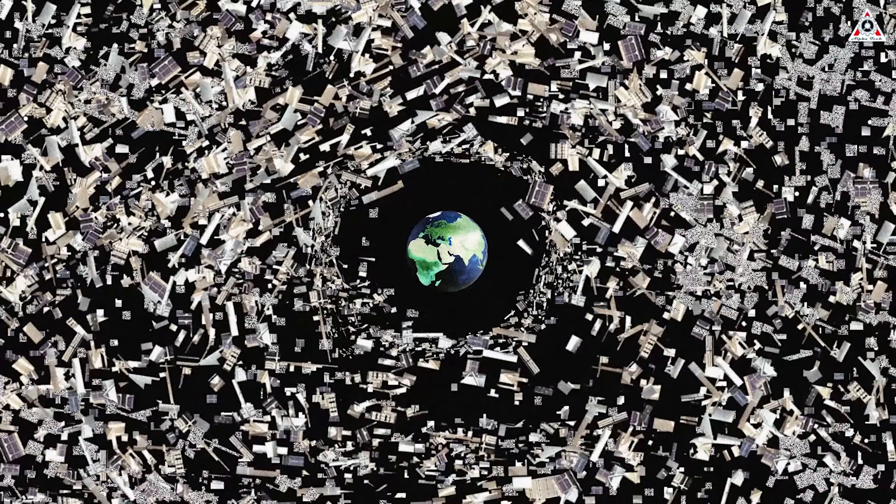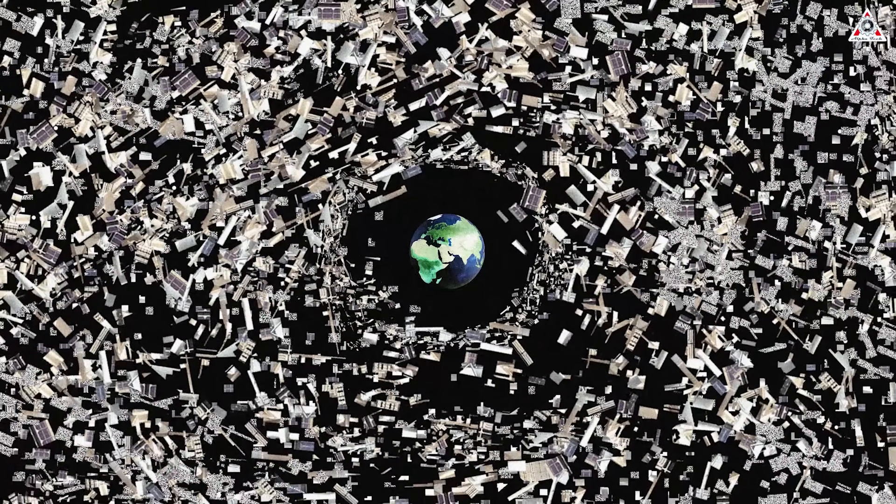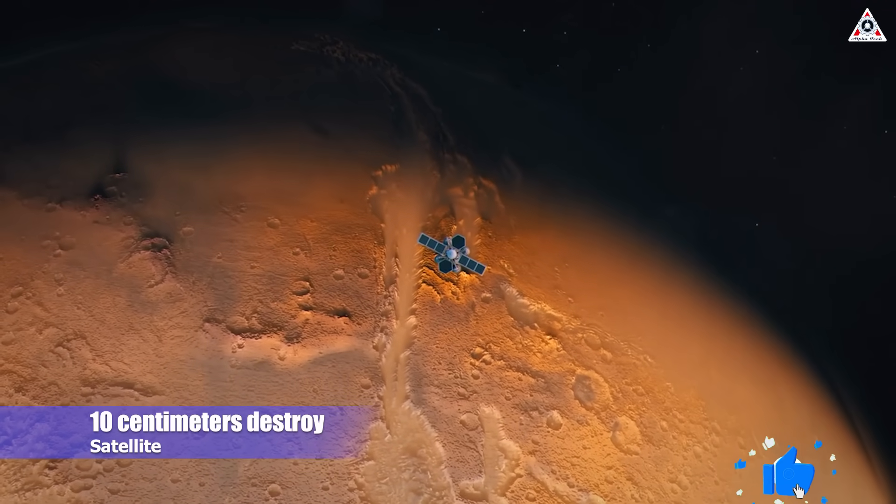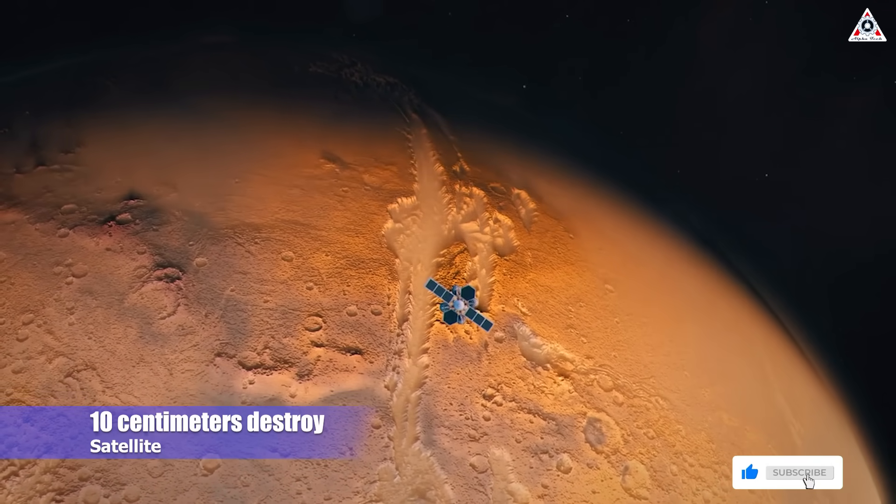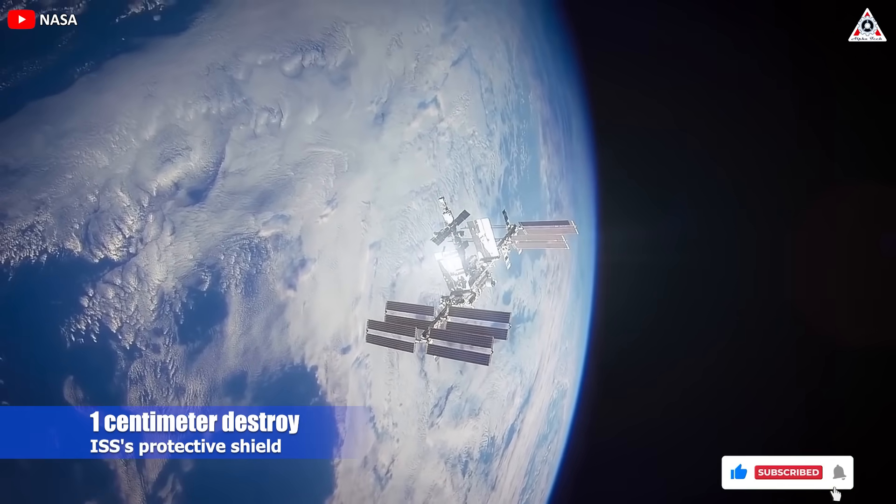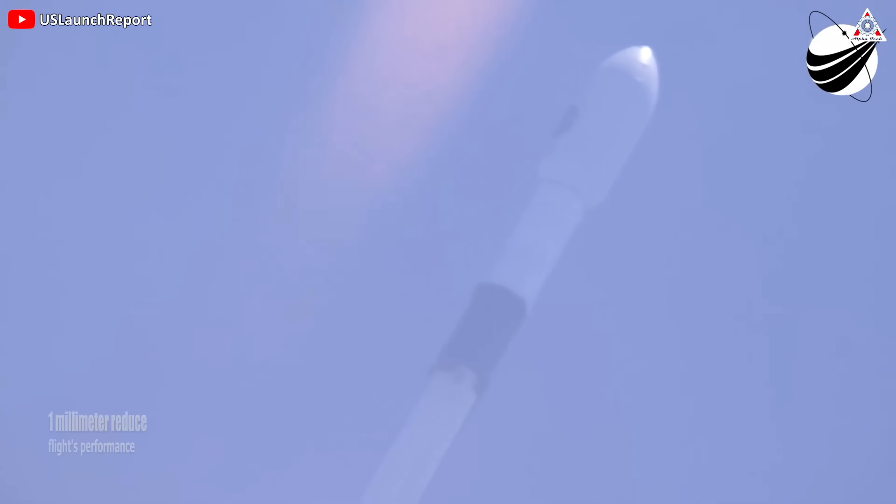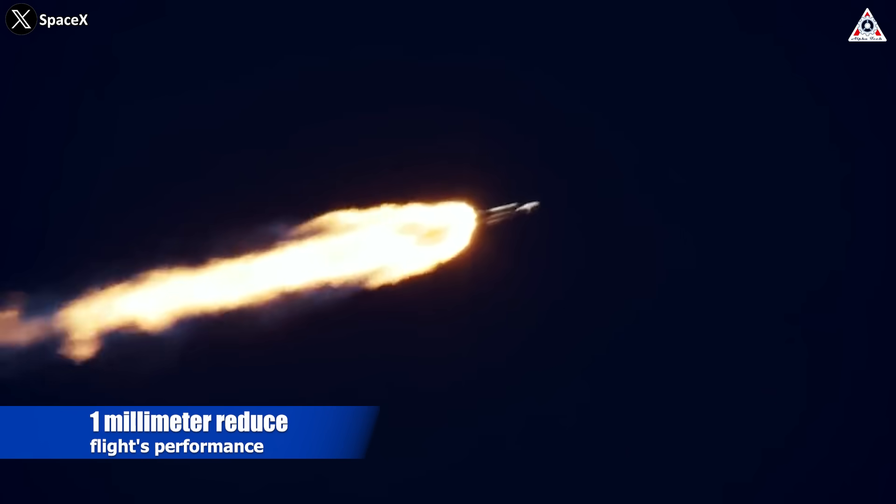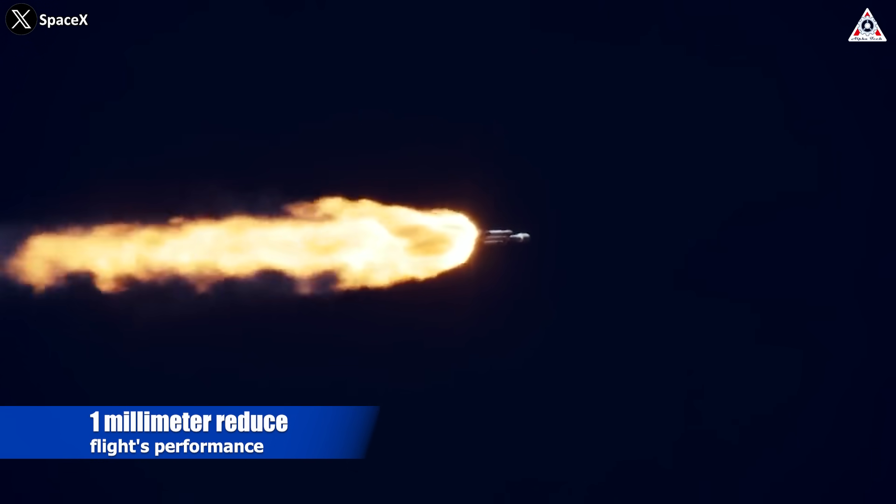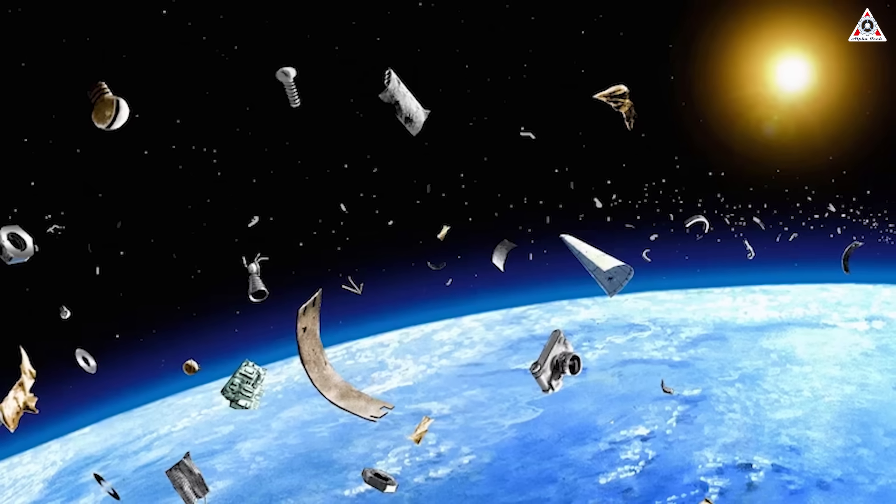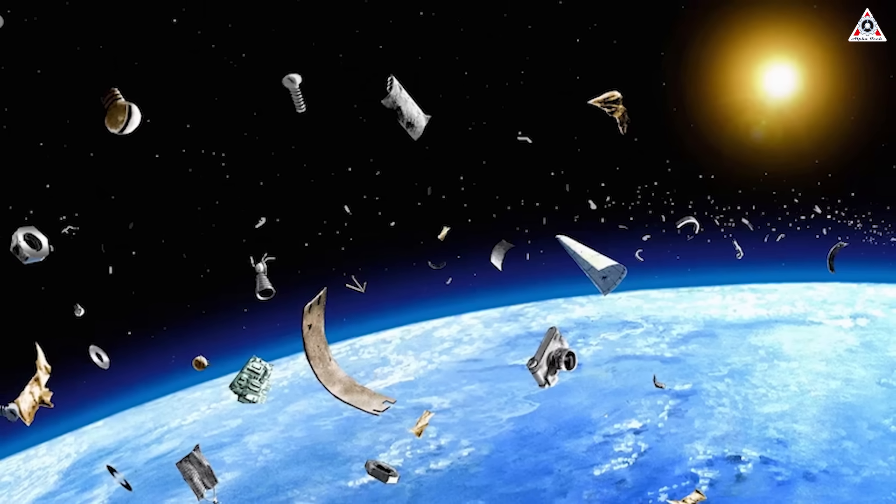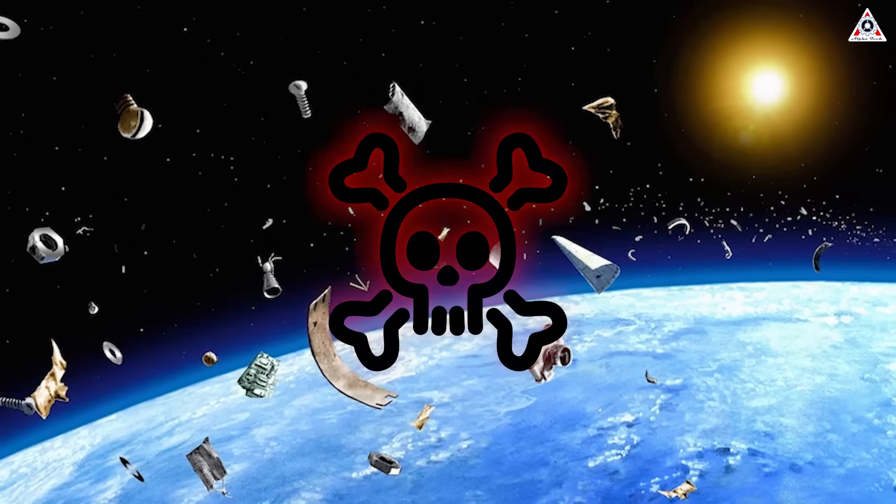Regardless of size, space junk is also extremely dangerous. For example, an object about 10 centimeters can destroy a medium-sized satellite. An object about 1 centimeter can break the ISS's protective shield. And even a tiny object only about a millimeter can completely reduce a flight's performance and make vehicles not able to reach their targets. And with the aforementioned huge number, perhaps we understand now why space junk is very dangerous.